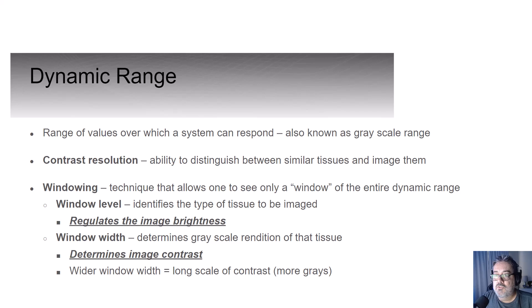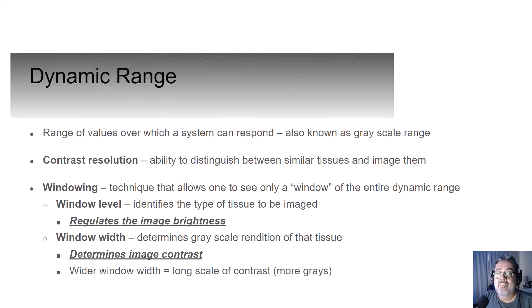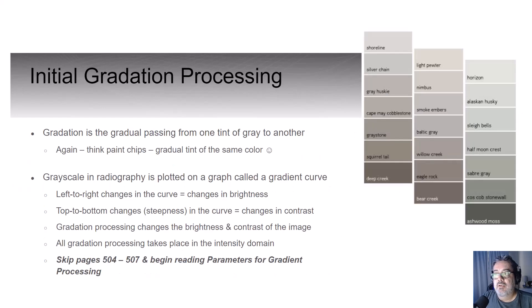Just remember that there are two functions of windowing: the window level and the window width. Window level regulates the brightness of the image. Window width influences the image contrast with the number of shades of gray seen.